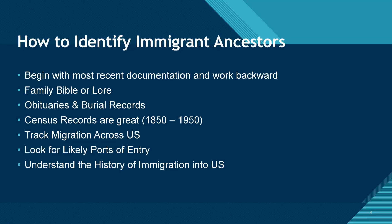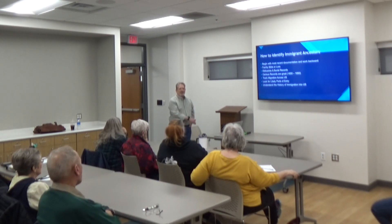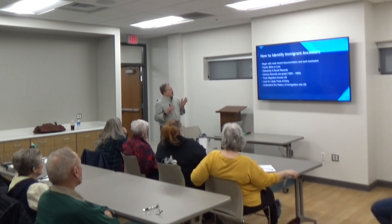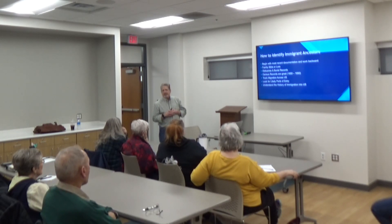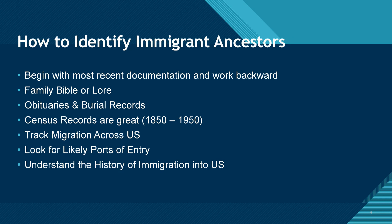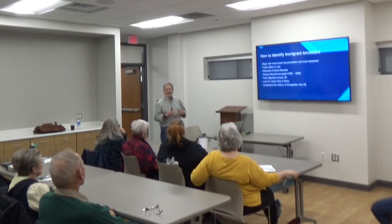How do you identify immigrant ancestors? As always, you begin with your most recent information and work backward — whether you're starting a family tree beginning with yourself, or if you find a new ancestor and start with their death and work backward. Start with the most recent information you have. A lot of times you'll find it in your family Bible or in family lore — stories like 'our ancestors came from Norway in the 1880s,' that kind of thing.